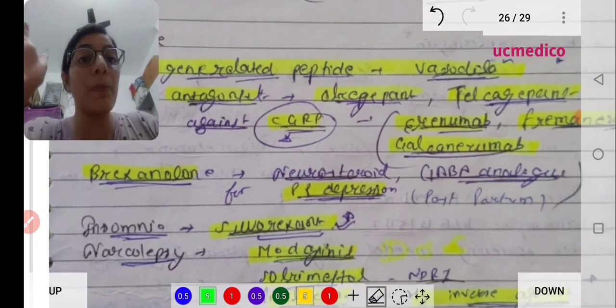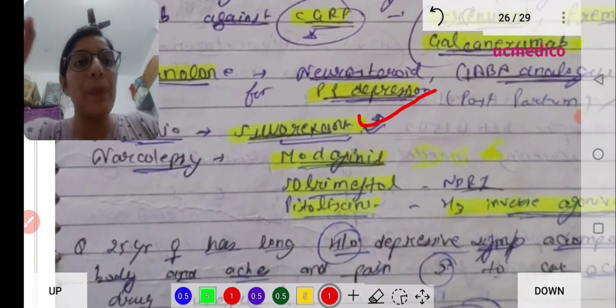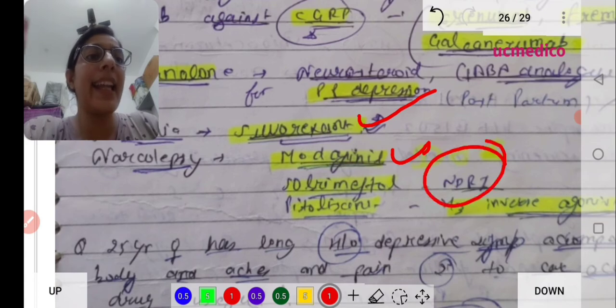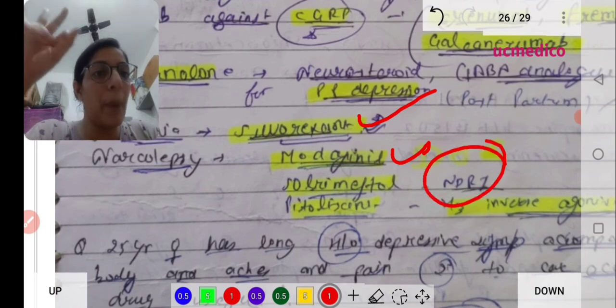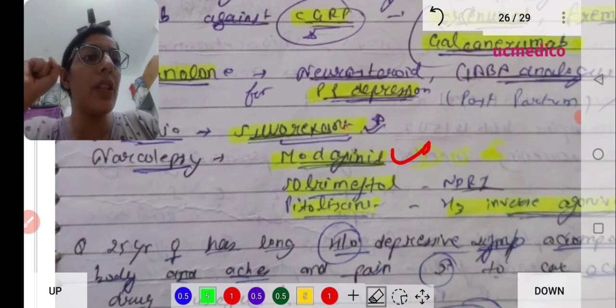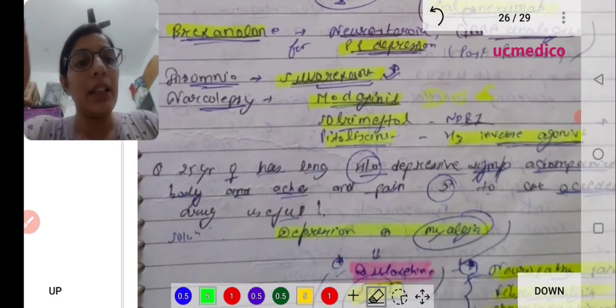Brexanolone is a neurosteroid GABA analog given for postpartum depression. Insomnia - we already did suvorexant. For narcolepsy, modafinil is drug of choice. Solriamfetol is NDRI, norepinephrine-dopamine reuptake inhibitor. Pitolisant is H3 inverse agonist.